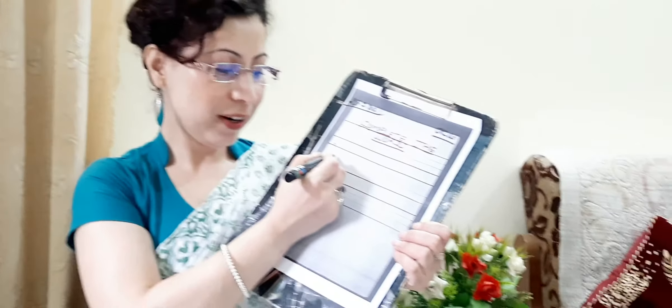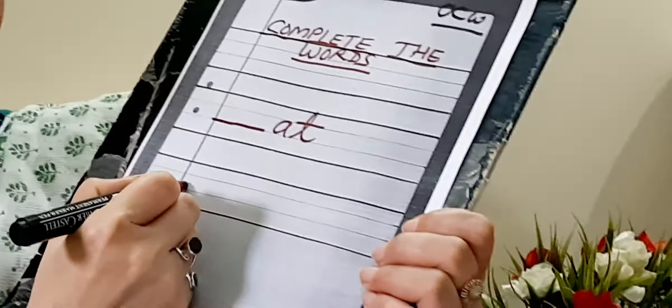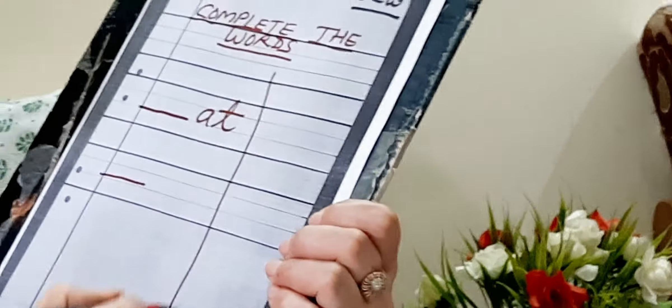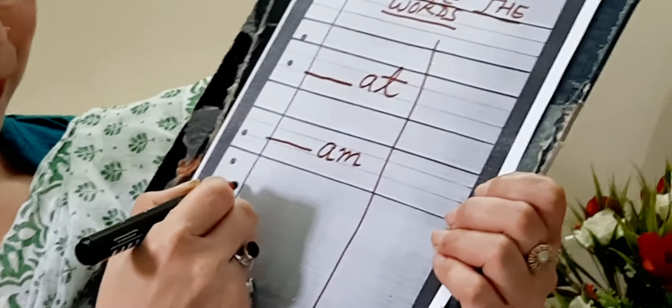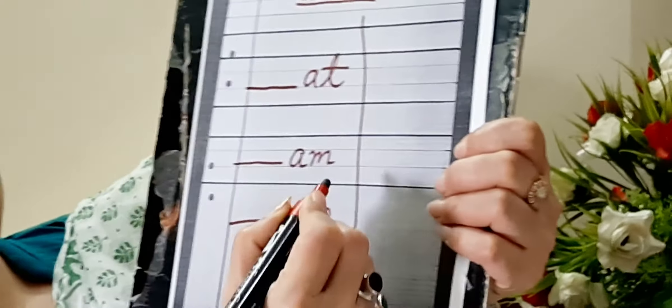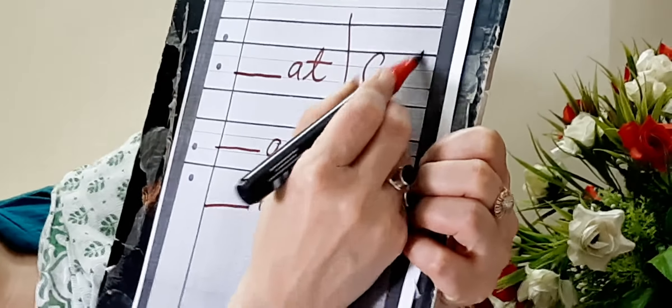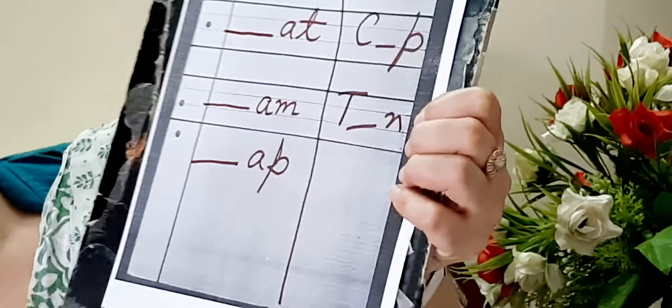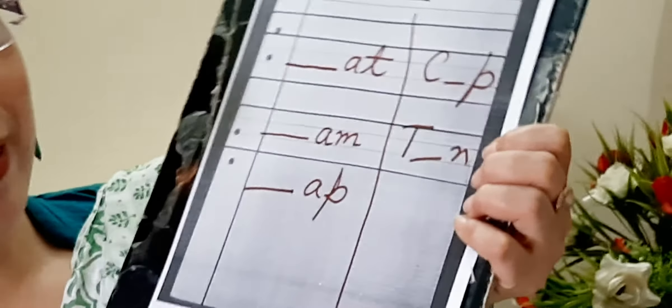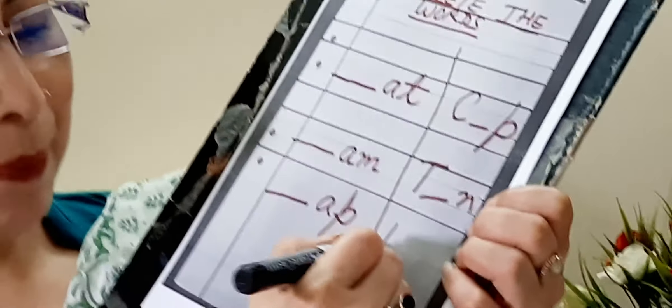Let me give you an example. Dash-AT. Dash-M, dash-M. Dash-A-P. Dash-AT. Dash-M. Dash-A-P. Similar examples: C-dash-P. D-A-T-dash-N. B-dash-G.